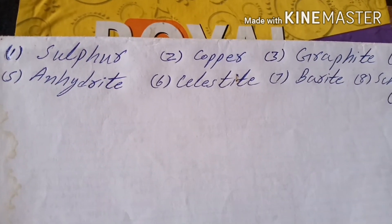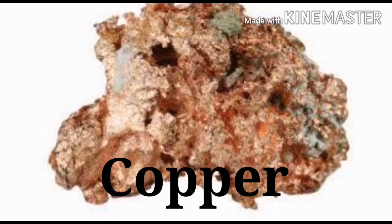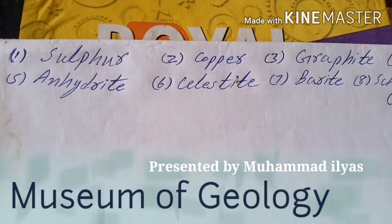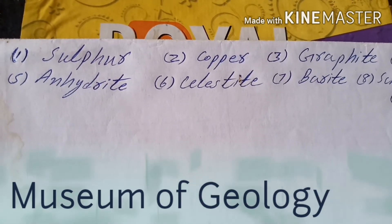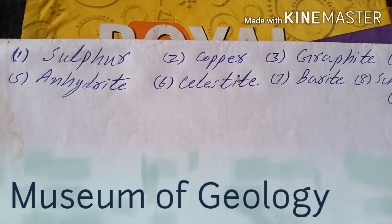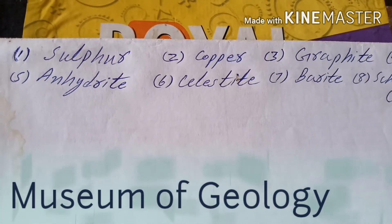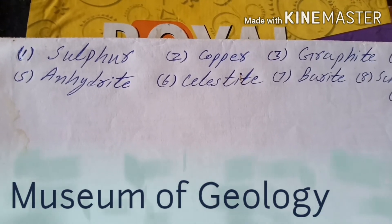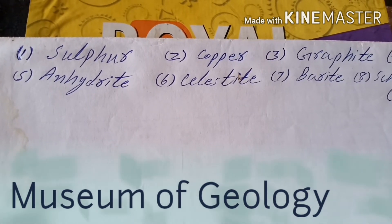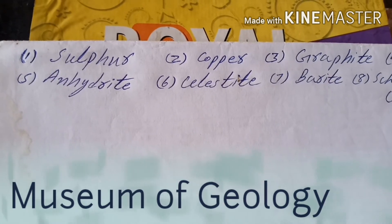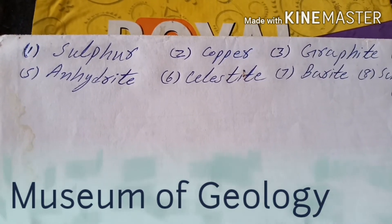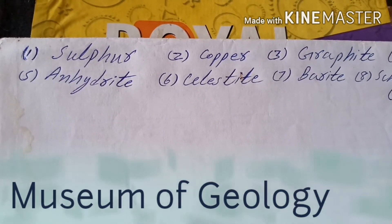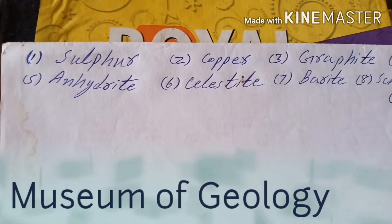Element number two is copper. Copper is also a native element and system is isometric. Form is crystalline and habit is dendritic. Color will be copper red, streak is also copper red, and luster is metallic. Diaphaneity is opaque and hardness will be 3.5. There is no cleavage in copper and fracture will be hackly. It has very high specific gravity. Because it is a native element, chemical composition is only copper.